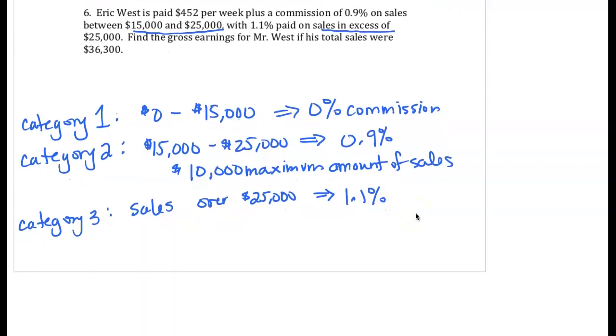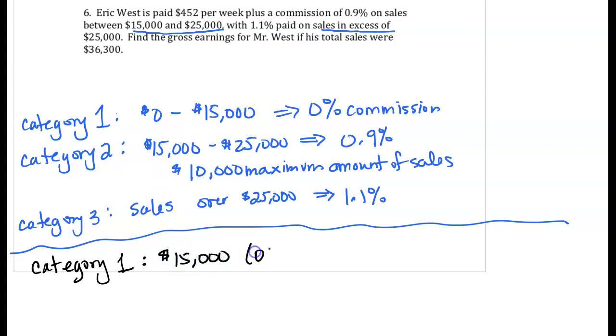Let's go ahead and take a look. In Category 1, there is $15,000 in sales, but it's at zero commission. So we get $0 for that amount.